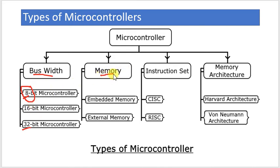We can also classify microcontrollers based on memory — that means whether the memory is embedded (on-chip) or external. External memory means the microcontroller does not have on-chip memory and we need to connect additional memory chips. Previous versions of the 80-family, like the 8031 microcontroller, had no memory inside the chip. Such microcontrollers are called external memory type microcontrollers.